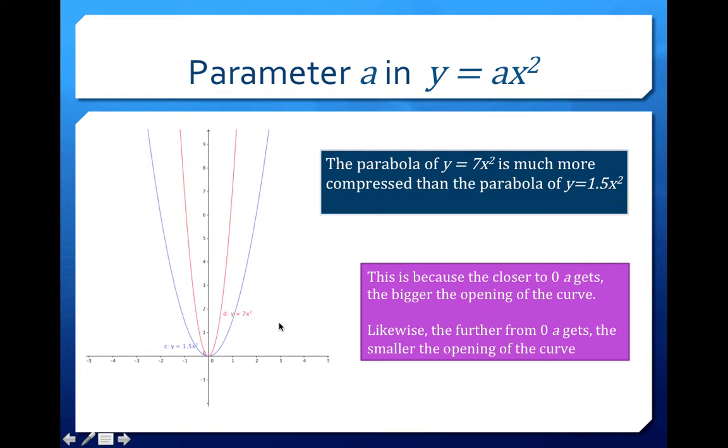The further away from 0 that a gets, so the bigger a is, the smaller the opening of the curve. So it's kind of the opposite of what you would expect. In this case, y equals 1.5x squared, so the smaller the a is, the bigger the opening. The bigger a is, the smaller the opening.